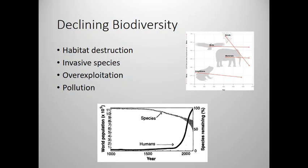That is due to four main reasons. Realistically, the underlying reason is that humans are reaching extremely high population numbers all over the world. But as those humans come in, we do four different things: habitat destruction, invasive species, over-exploitation, and pollution. Let's spend some time thinking about each one of those.